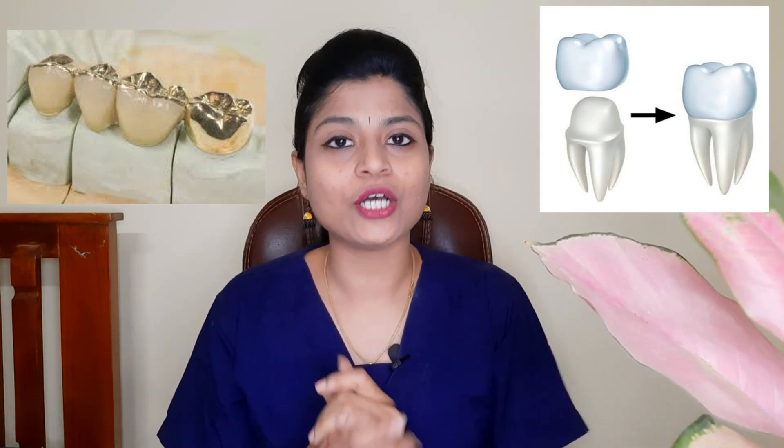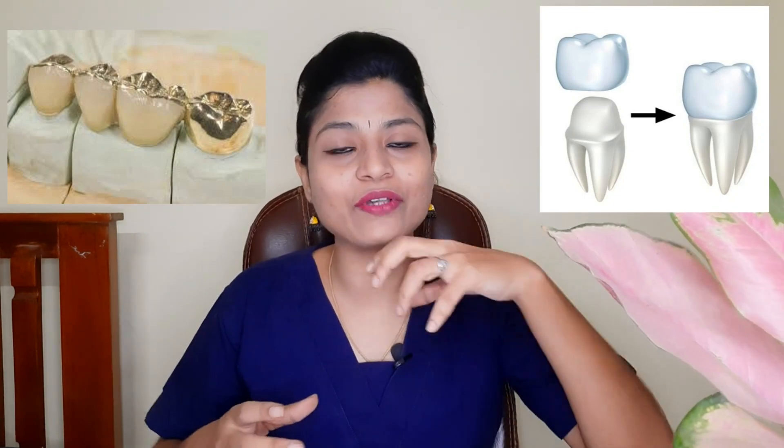For a whole crown, the entire tooth form helps with retention, but for a half crown or three-fourth crown we do not have sufficient retention. So we provide a groove in the proximal surface to prevent lingual tipping of the crown.